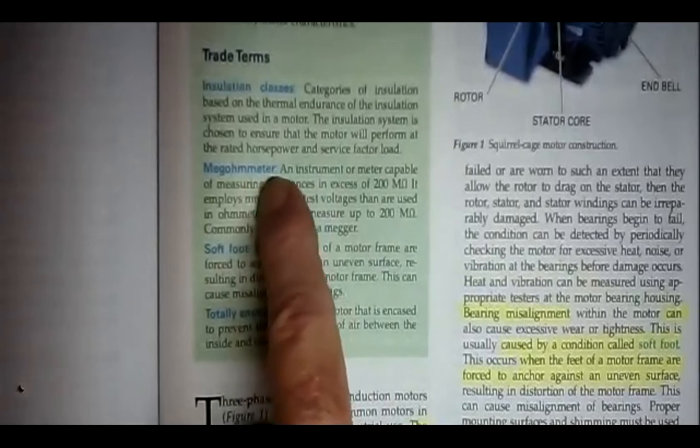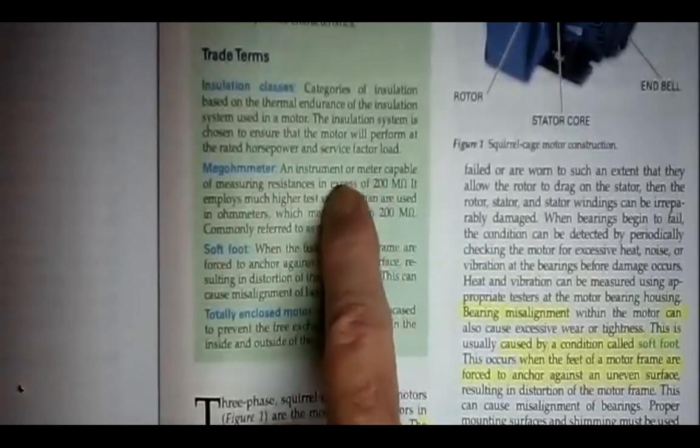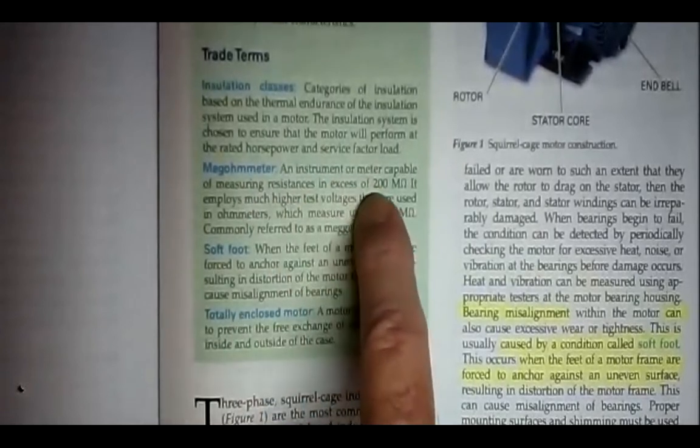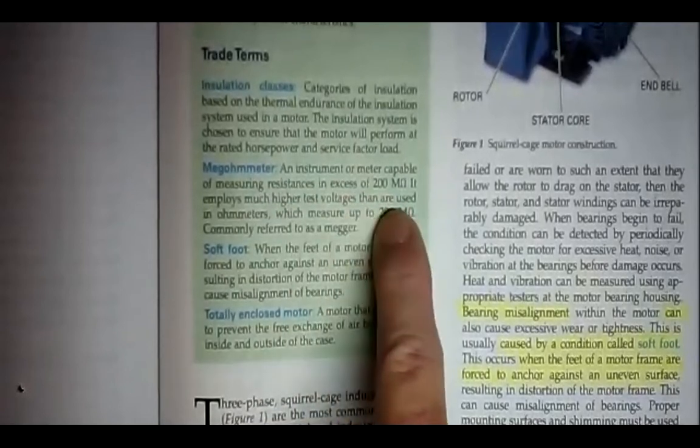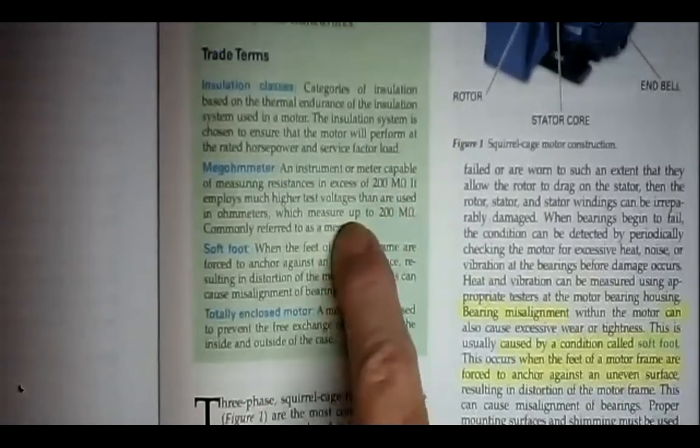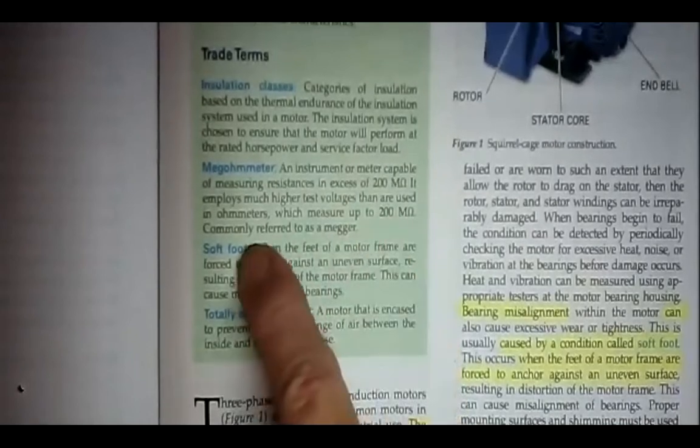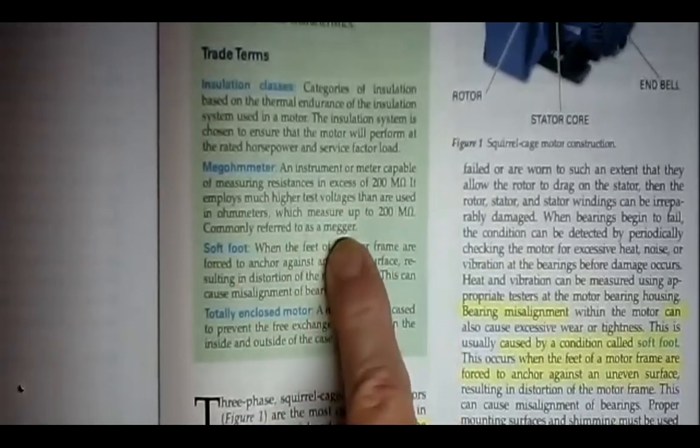An instrument or meter capable of measuring resistance in excess of 200 million ohms that employs much higher test voltages than are used in ohmmeters, which measure up to 200 million ohms, commonly referred to as a mega.